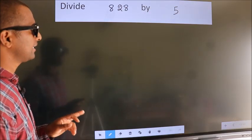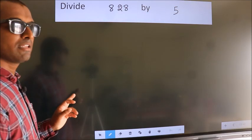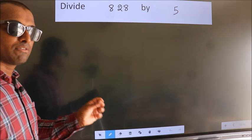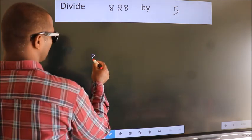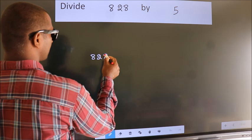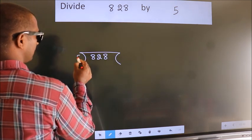Divide 828 by 5. To do this division, we should frame it in this way. 828 here, 5 here.